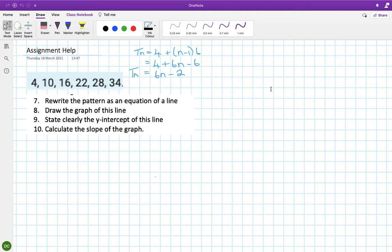Now, part 7 says that I have to rewrite the pattern as an equation of a line. So, I take my pattern, and I'm going to change this into a Y, and I'm going to change this into an X, and everything else stays the same. So, Y equals 6X minus 2 is rewriting the pattern as an equation of a line.